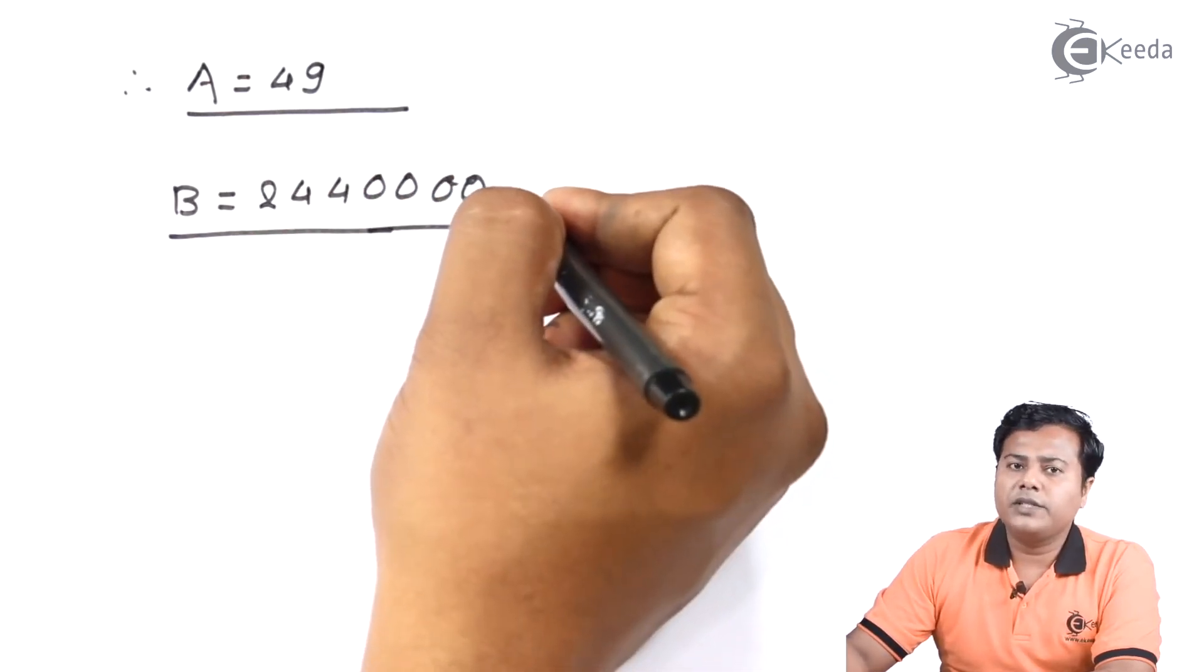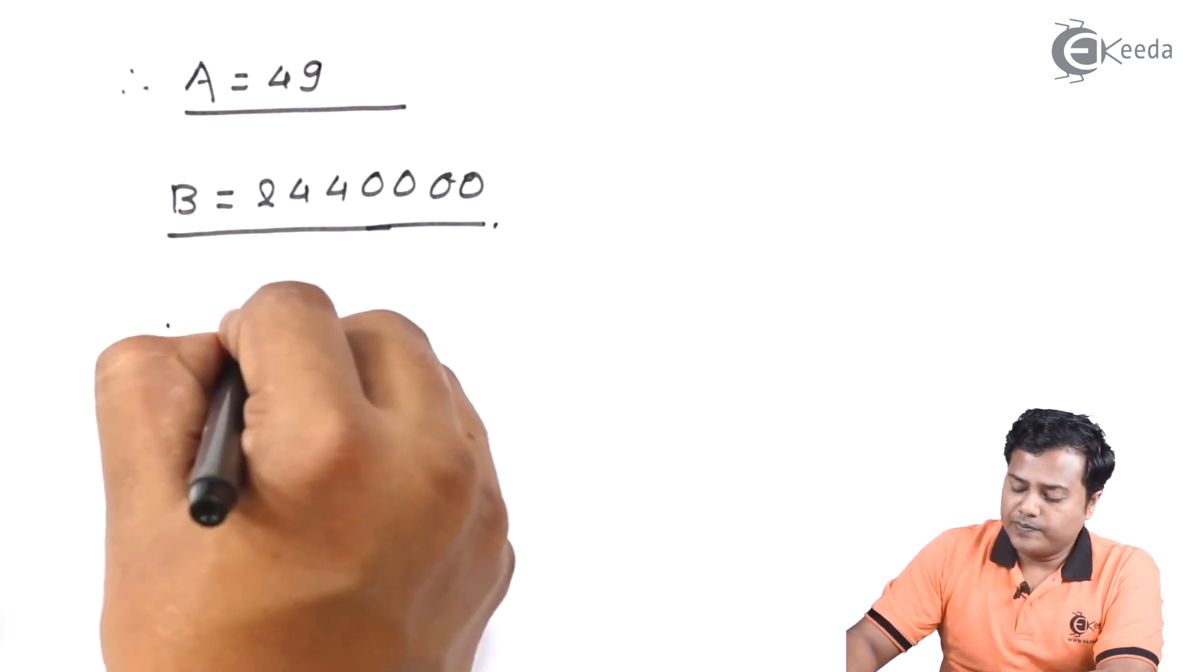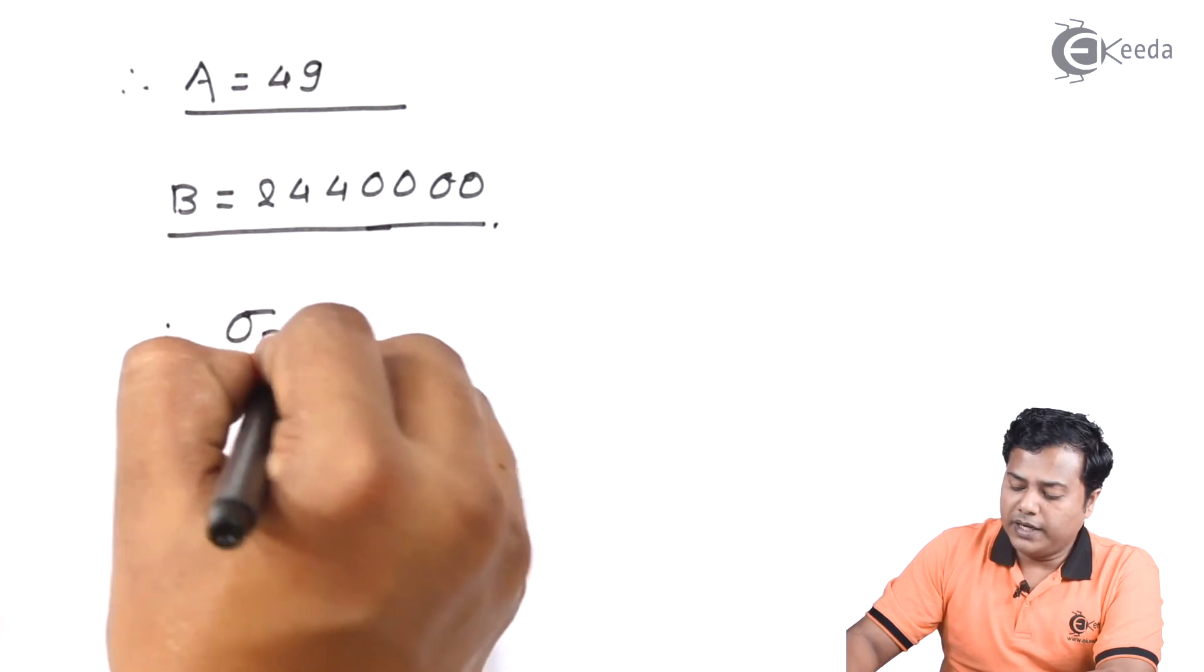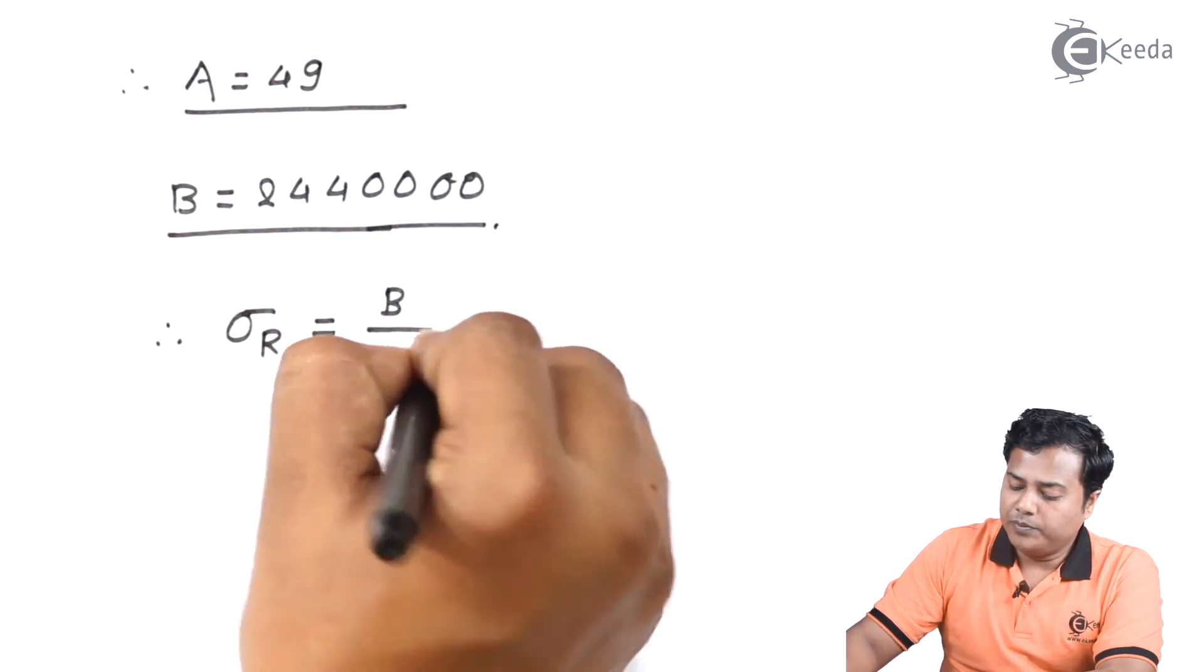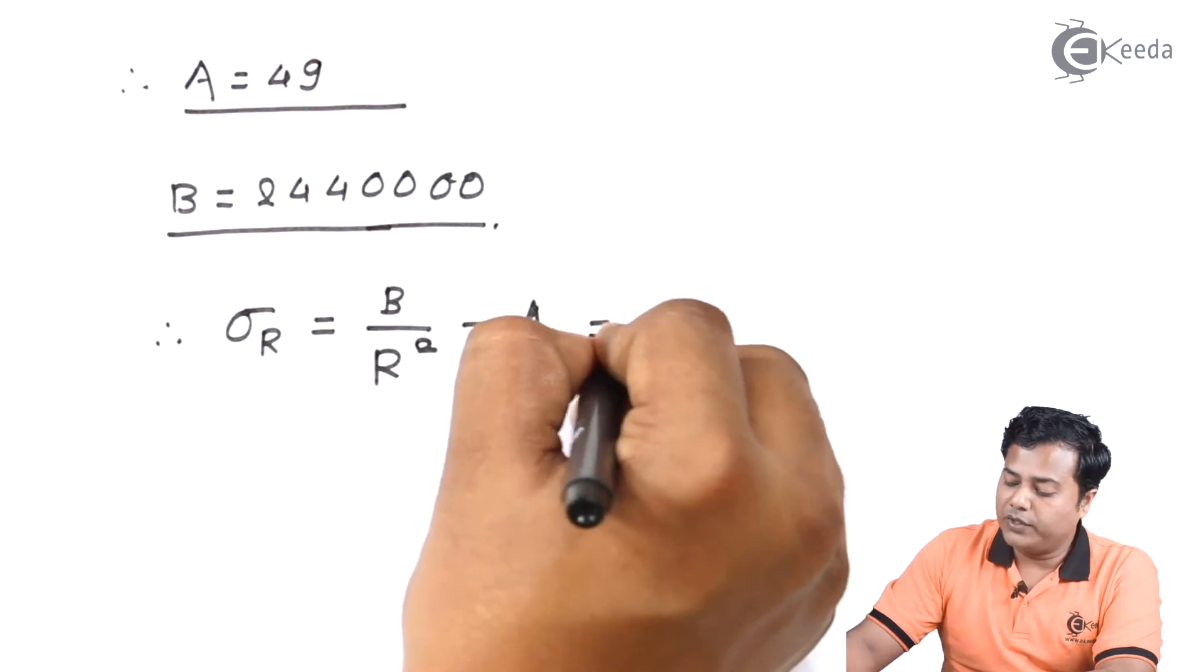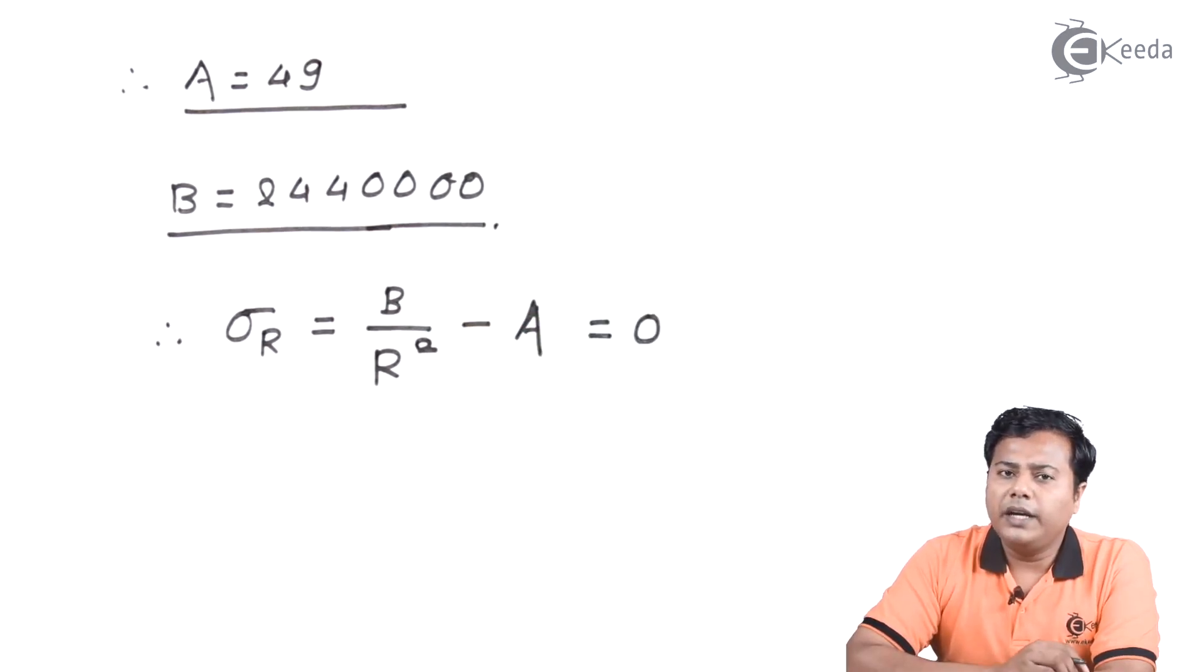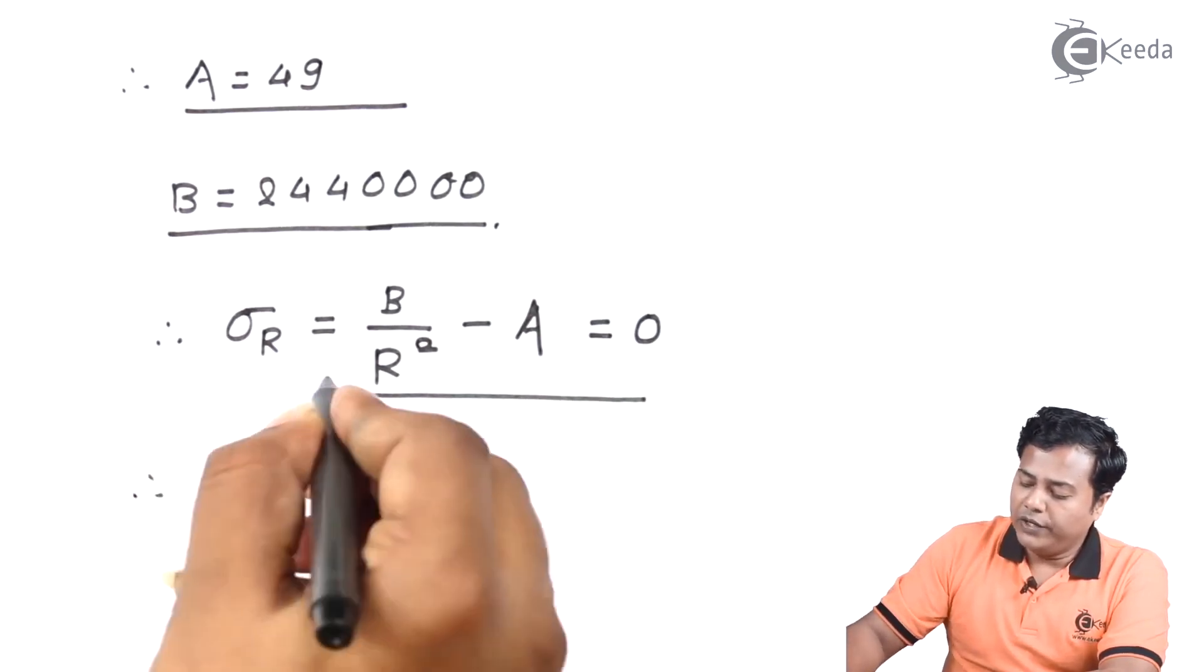After substituting these values in Lemmy's equation I will get the equation in this form: sigma at the outer edge is equal to B upon R square at outer edge minus A which has to be equal to 0. Because the radius ends at the outer surface, the radial stress at the outer surface becomes 0 and that's why I am equating it to 0. And therefore the value of B which is divided by R square, so R value we have at the outer surface will be the outermost radius minus the value of A which is 49 has to be equal to 0.